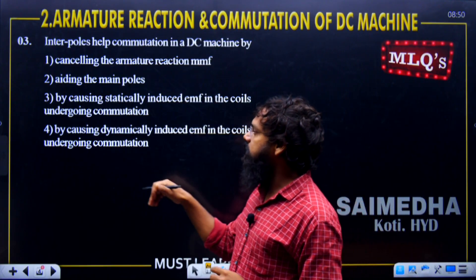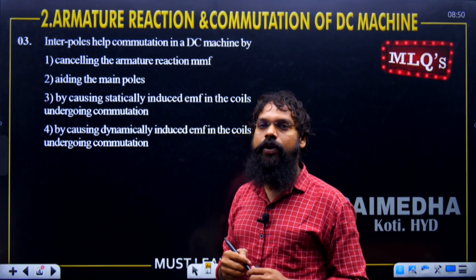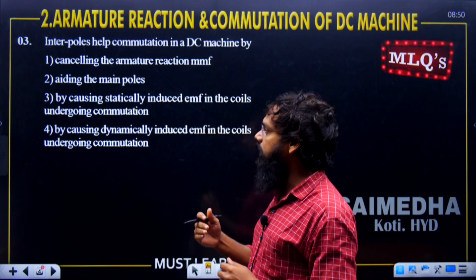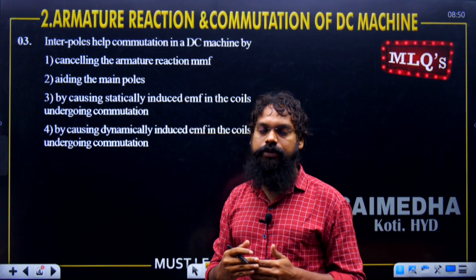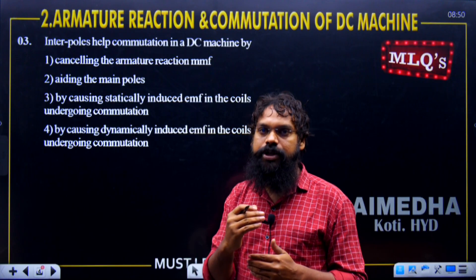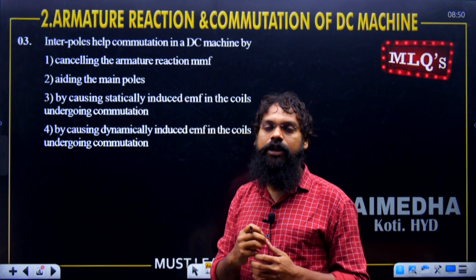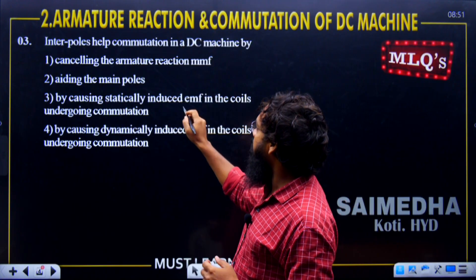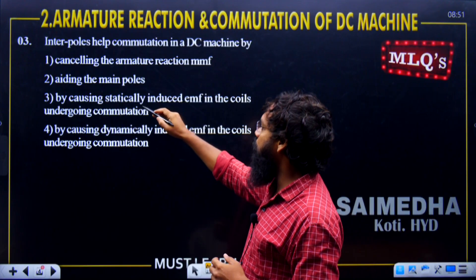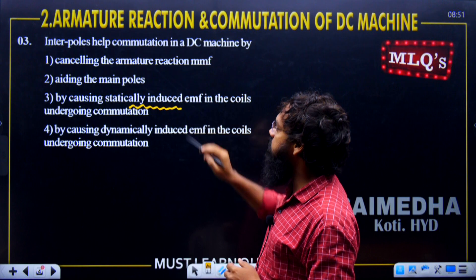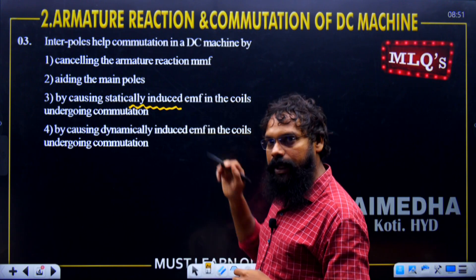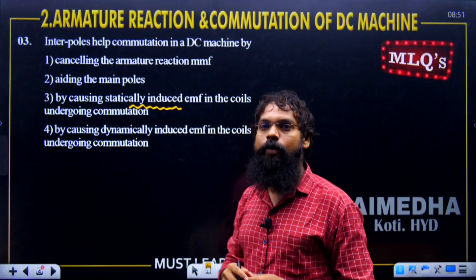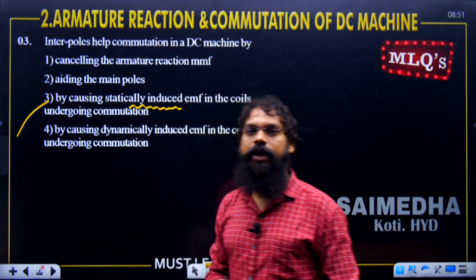What we do is induce an EMF in the opposite direction in the coil undergoing commutation. When the coil is in commutation — which means the brush position — commutation is improved by causing the dynamically induced EMF in the opposite direction. This causes the dynamically induced EMF in the coils undergoing commutation. This is option number 3, and it is correct.